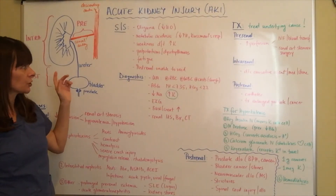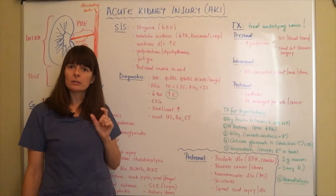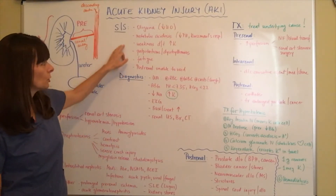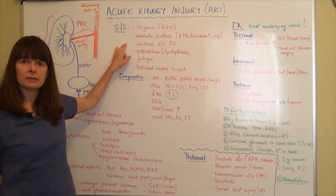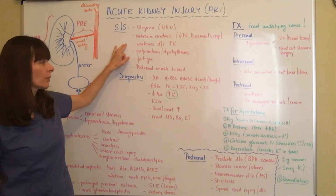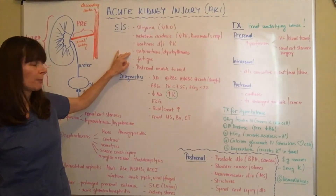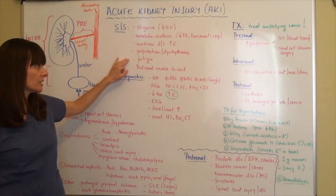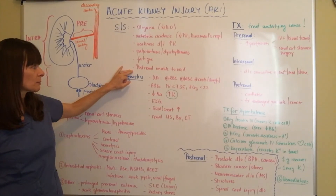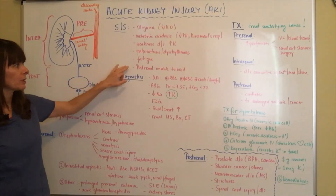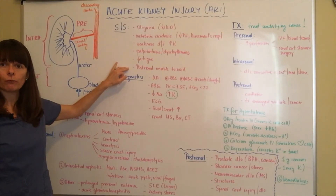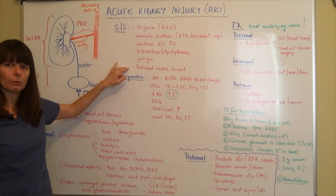If the kidney is not functioning, it cannot excrete sodium and potassium appropriately, leading to hyperkalemia — increased potassium levels — which will make the patient weak. Potassium plays a role in muscle contraction, and the biggest muscle we worry about is the heart, so this can lead to palpitations and dysrhythmias, as well as fatigue. If there are post-renal causes such as prostate issues, bladder cancer, or stones, the patient will be unable to void or will only produce a minor amount of urine.